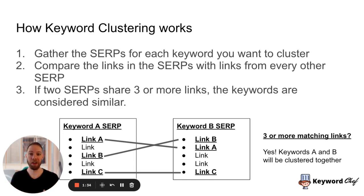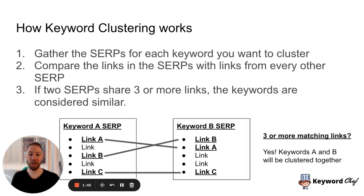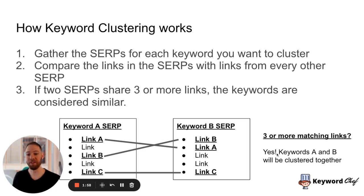Here's how keyword clustering works. Step one is to gather the SERP for every keyword, then compare the links inside the SERPs against each other. If two SERPs share three or more similar links, they can be considered similar. We can see this here: keyword A's SERP and keyword B's SERP are two different keywords, and they have three matching links, so they are considered clustered.